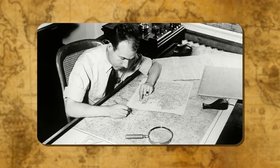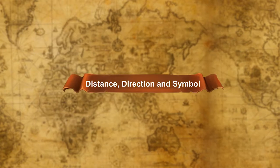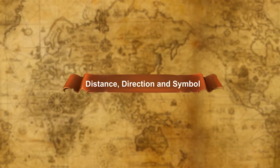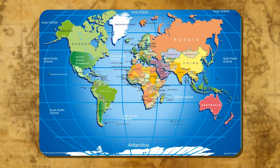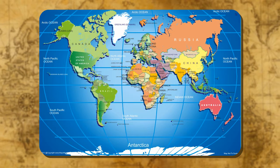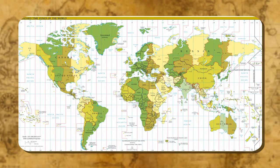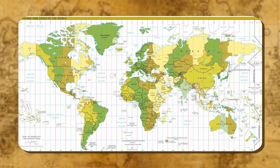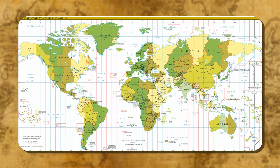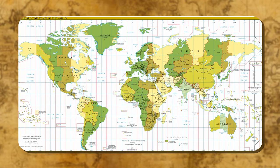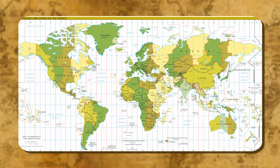The person who makes a map is known as a cartographer. Distance, direction and symbol. Maps are drawings which reduce the entire world or its parts to fit on a sheet of paper. This reduction is made with utmost care so that the distances between the places are kept true. Thus, distances are kept true to scale.